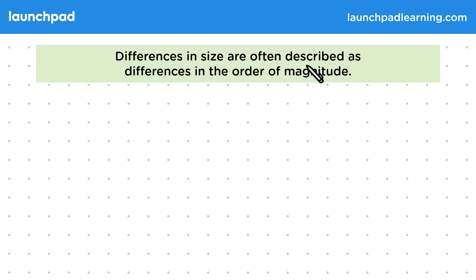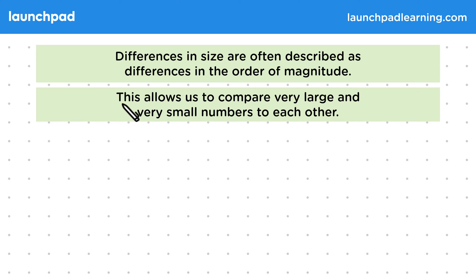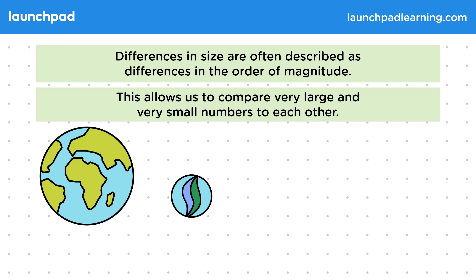Differences in size are often described as differences in the order of magnitude. This allows us to compare very large and very small numbers to each other. For example, how much larger is the diameter of the Earth compared to a marble?